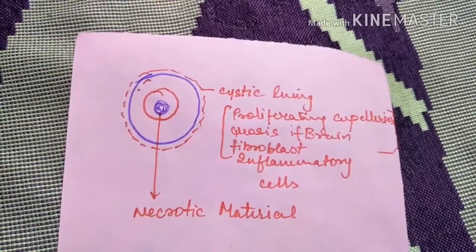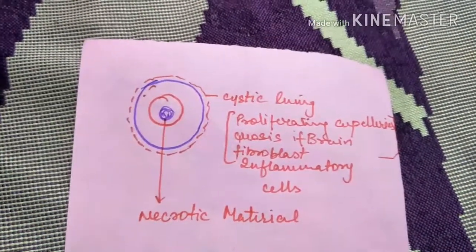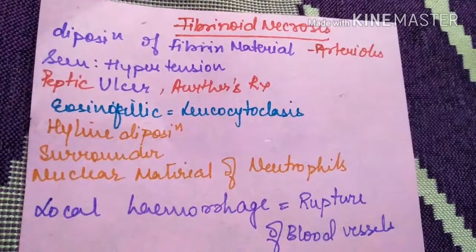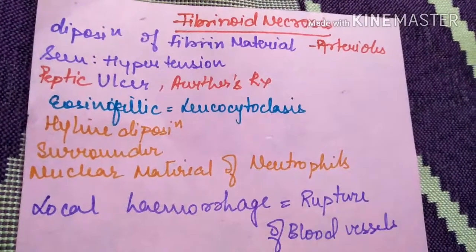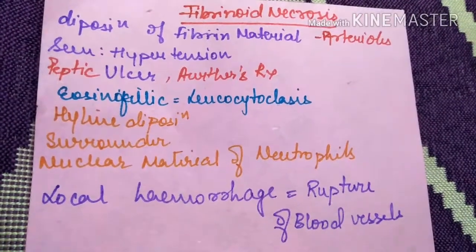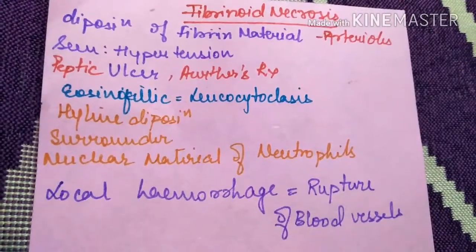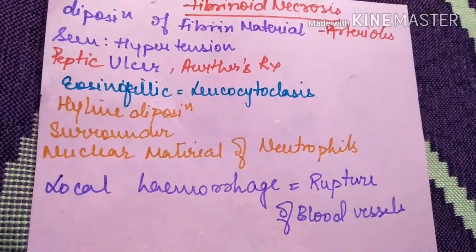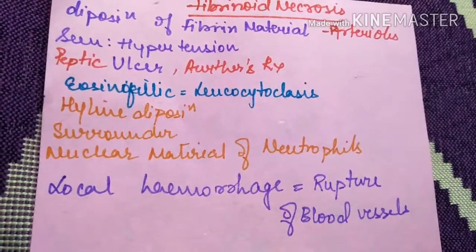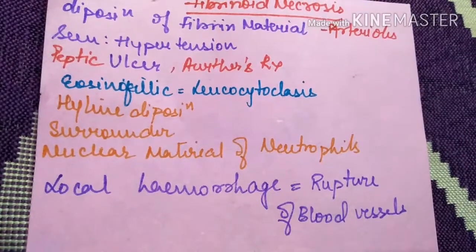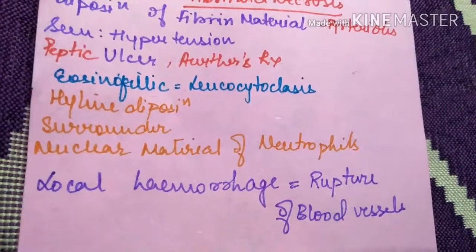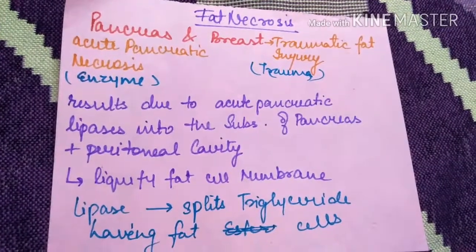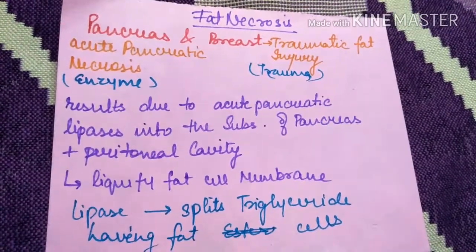Inflammatory cells are also seen, but fibroblasts are not seen in brain. In fibrinoid necrosis, there is deposition of fibrin material seen in hypertension, peptic ulcer, and Arthus reaction. It is eosinophilic hyaline deposition and nuclear material of neutrophils is seen, along with local hemorrhage — that is rupture of blood vessels.